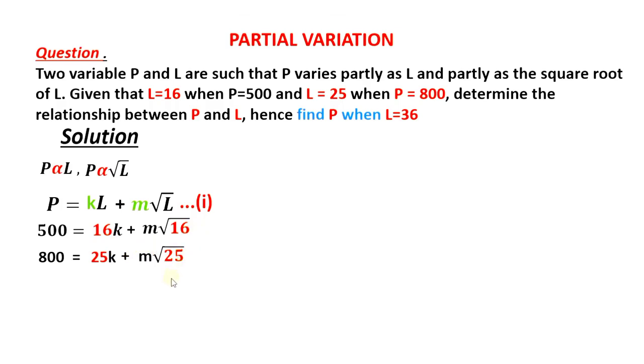These two equations simplify as: the first one we have 16K plus 4M is equal to 500, that is root 16 is 4, so that we have 4M. So let's call this equation 2. Next, we will have 25K plus 5M, 5M is root 25M and root 25 is 5, and then equate it to 800 here, and we can call this equation 3.